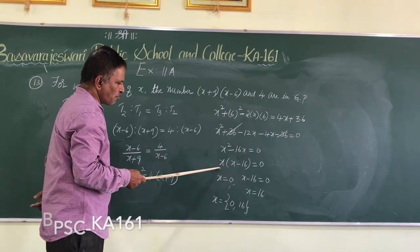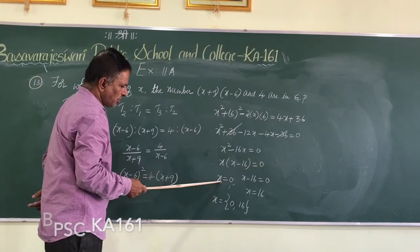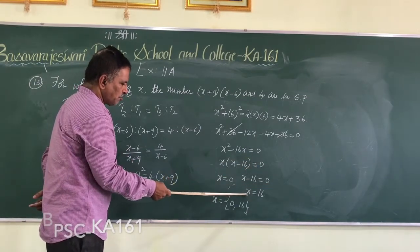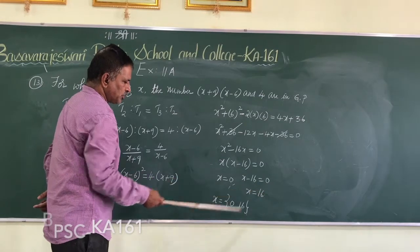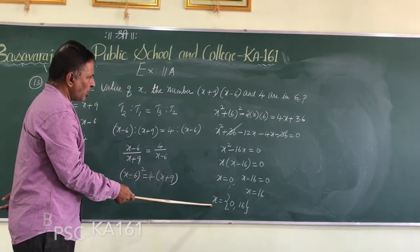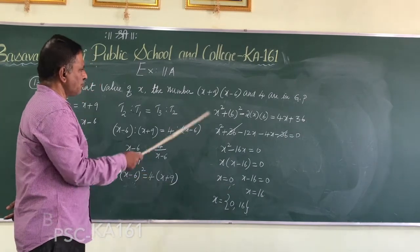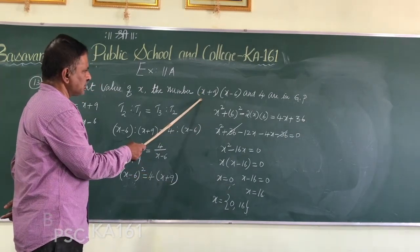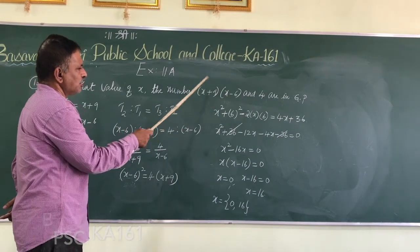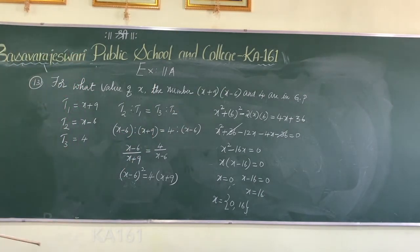Taking X common: X times (X minus 16) equals 0. So X equals 0 is one solution, and X minus 16 equals 0 gives X equals 16. Therefore, the values of X are 0 and 16. If X equals 0 or X equals 16, the given terms are in geometrical progression.